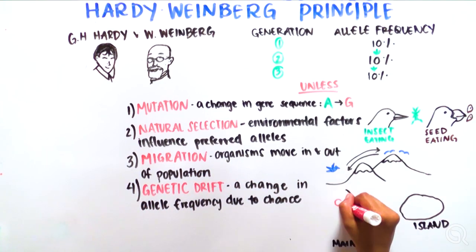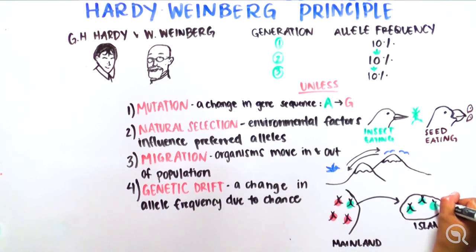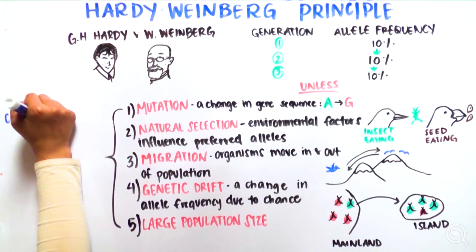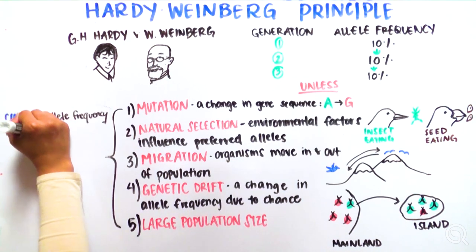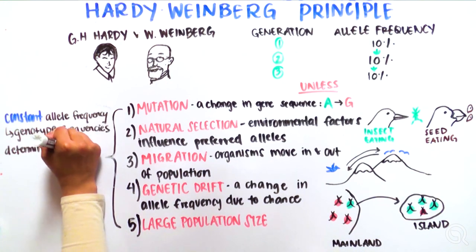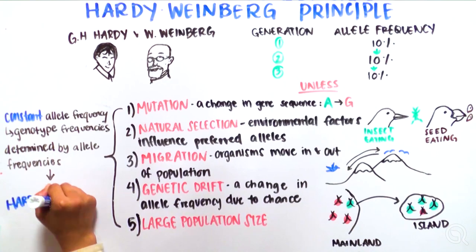In addition to assuming no change in these four areas, the Hardy-Weinberg Principle also assumes a large population size. When these assumptions are met, the frequency of alleles in a population will remain constant, and the genotype frequencies, the combination of alleles, will be determined by the allele frequencies.